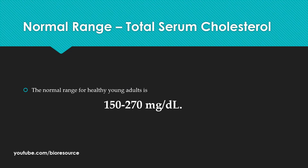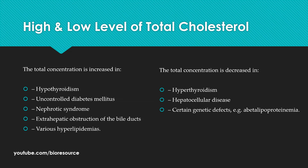The normal range for total serum cholesterol is 150 to 270 mg per deciliter. In certain cases, the amount of total cholesterol may be elevated in conditions such as hypothyroidism, diabetes, and nephrotic syndrome. Whereas the total concentration is decreased in cases of hyperthyroidism, hepatocellular disease, and other genetic defects.